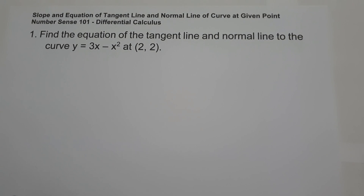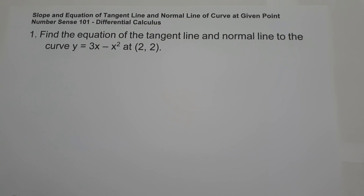For today's video, we are going to have a practice problem on how to find the slope and equation of tangent line and normal line of a curve at the given point. The slope of the tangent line is perpendicular to the slope of the normal line. To find the equation of the tangent line, we use the given slope, and for the normal line, we use the perpendicular slope.